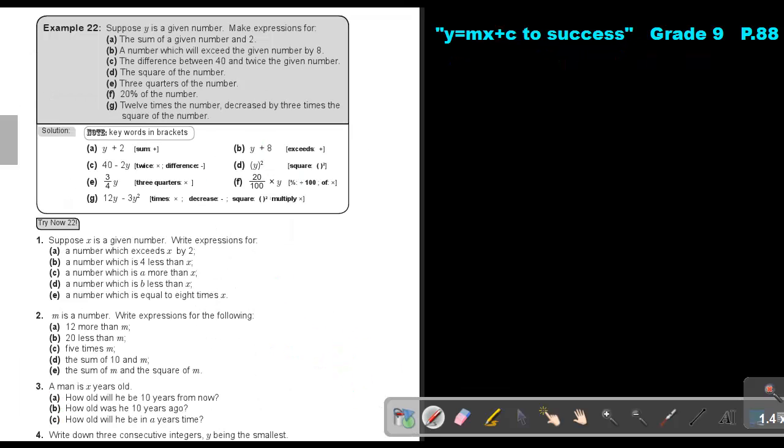Let's go to the next one. So I'm going to go through this example. Suppose y is a given number, so they tell you, you must take the unknown number as y. Make expressions for the sum of a given number and 2, so it will be y plus 2. A number which will exceed the given number by 8. So what will it be? y plus 8. Exceeds means add. The difference between 40 and twice the given number. So that given number, so 2y and the difference is 40. So 40 minus 2y. Or because I said the difference, it can be 2y minus 40 also. Then number d, the square of a number. So just take that number y and square it.